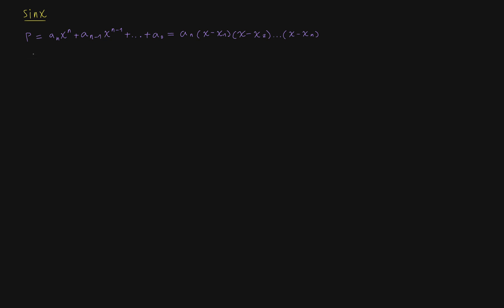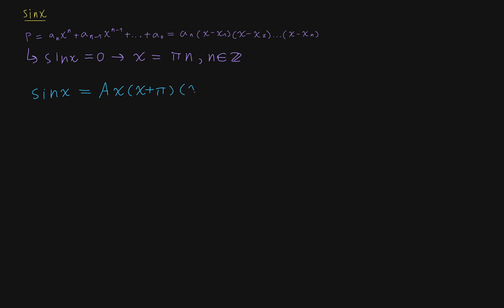First, we're going to start with sine x. We know that when sine x is equal to 0, that's going to be when x is equal to pi n, where n is just some integer. With this in mind, we can write sine x as a product of these roots. For the leading coefficient, we're going to figure that out later — I'm just going to call it capital A. Then we have x, and writing these alternating: x plus pi, times x minus pi, times x plus 2 pi, times x minus 2 pi, and so on. You may notice that we can actually factor these as difference of squares.